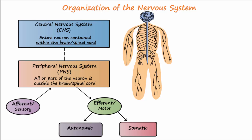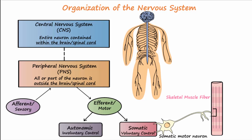Neurons in the PNS are afferent sensory neurons or efferent motor neurons. Efferent or motor neurons may be either autonomic or somatic. Autonomic neurons are under involuntary control, while somatic neurons are under voluntary control. The neuromuscular junction is a synapse that connects axon terminals of somatic motor neurons to skeletal muscle cells or fibers, allowing the neuron to activate the muscle and cause muscle contraction.